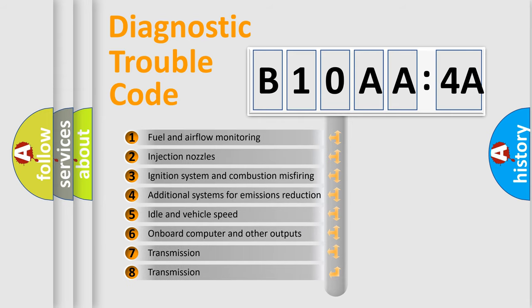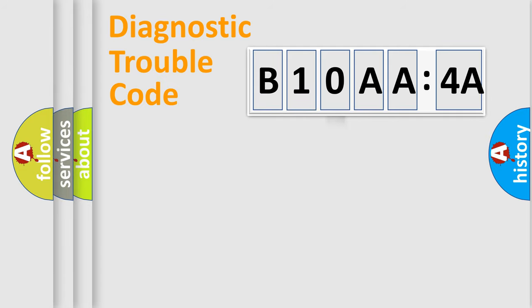The third character specifies a subset of errors. The distribution shown is valid only for the standardized DTC code. Only the last two characters define the specific fault of the group.